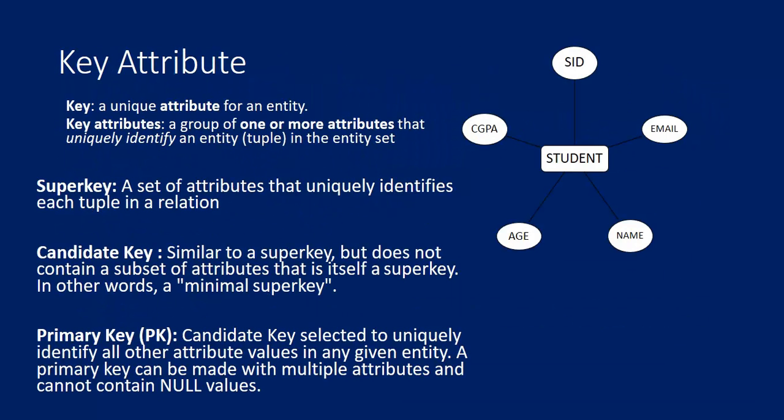A key attribute is a unique attribute for an entity — a group of one or more attributes that uniquely identifies an entity in the entity set. A super key is a set of attributes that uniquely identifies a tuple in a relation. A candidate key is similar to a super key but does not contain a subset that is itself a super key — in other words, it is the minimal super key. A primary key is the candidate key selected to uniquely identify all other attribute values; it can be made with multiple attributes and cannot contain null values.